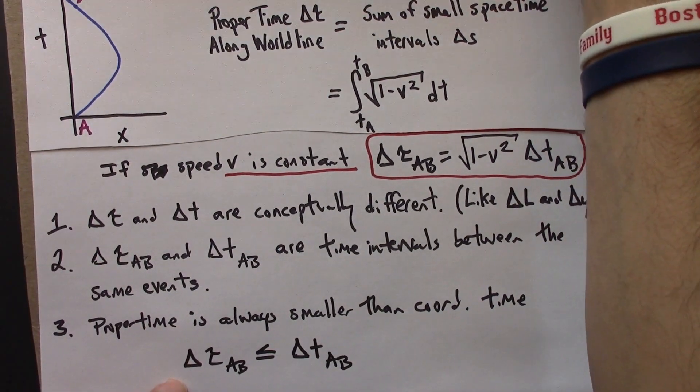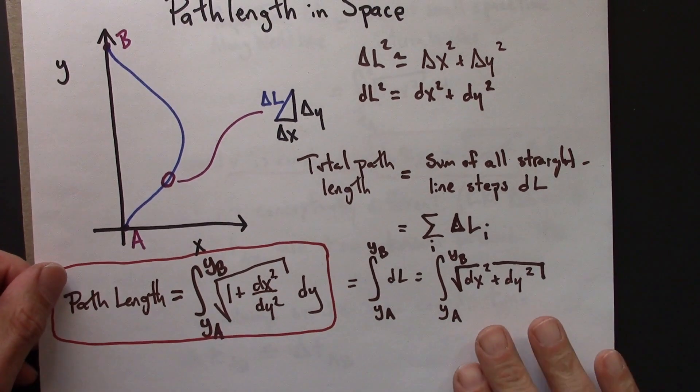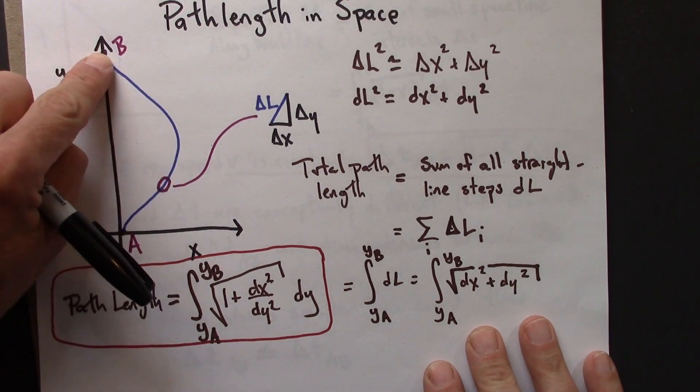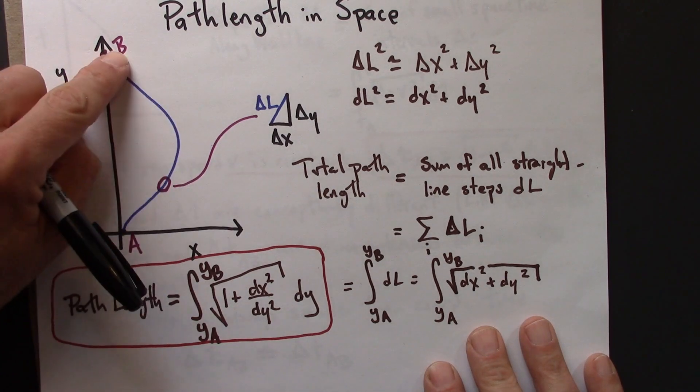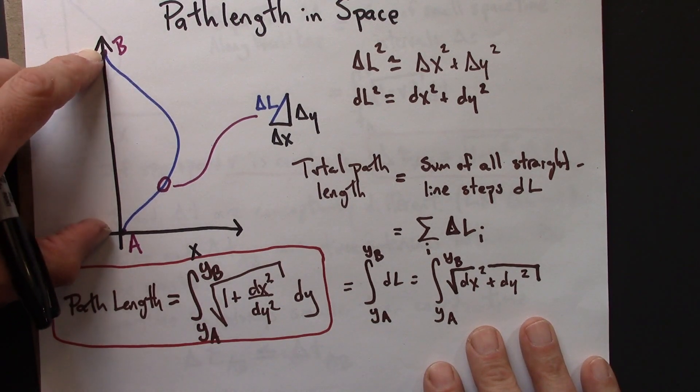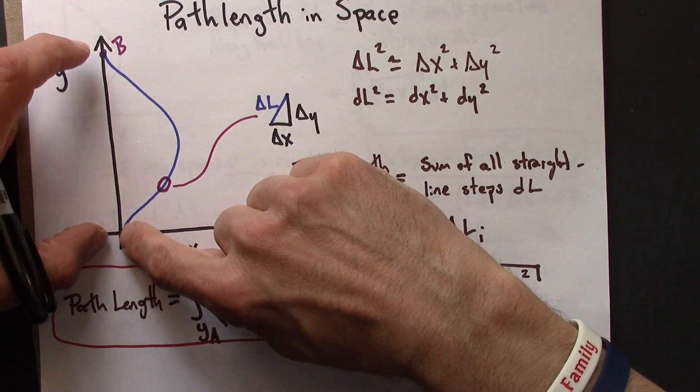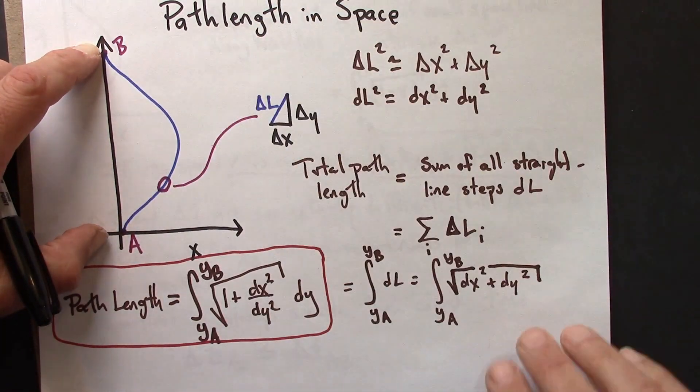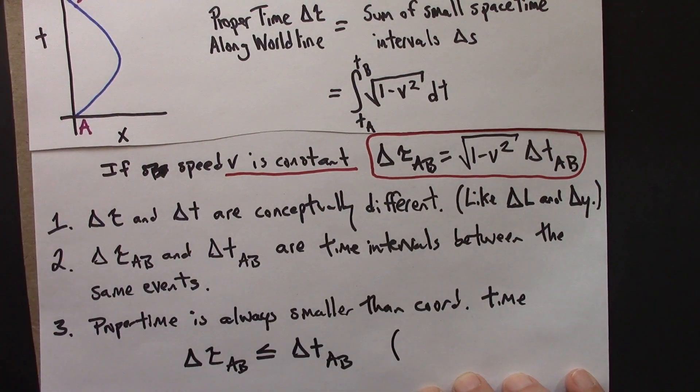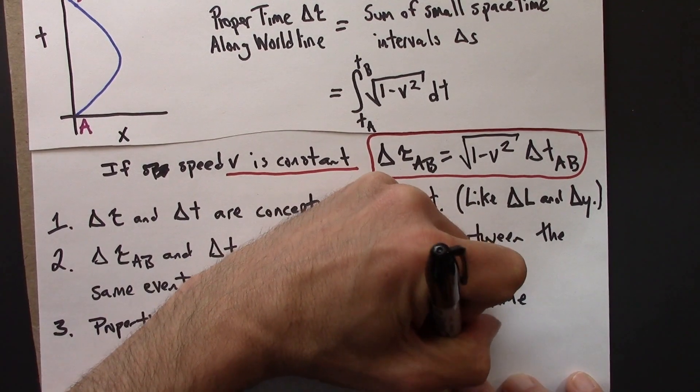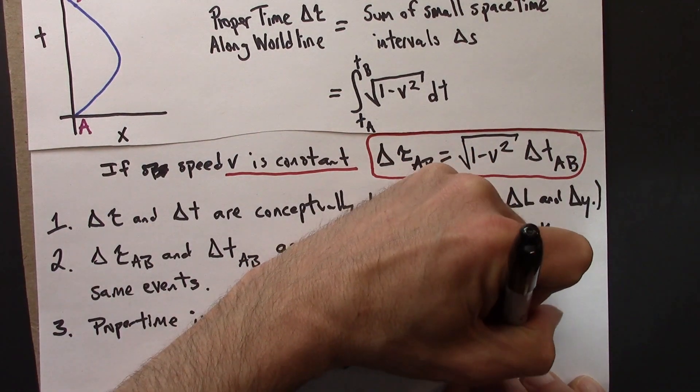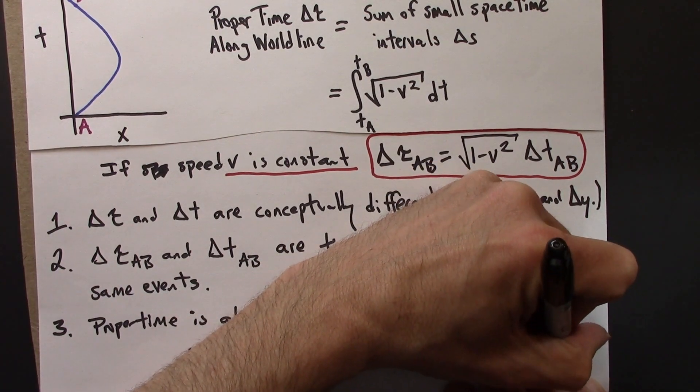And let's compare that result to what would be going on here back in space, not space-time. So here, the path length, delta L, is always greater than or equal to coordinate separation. There's no way that a curved path from A to B is shorter than a straight line path. So in space, it's the other way around that delta L AB is always greater than or equal to delta y AB.